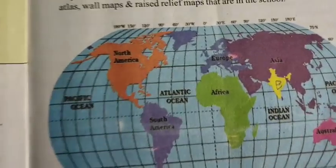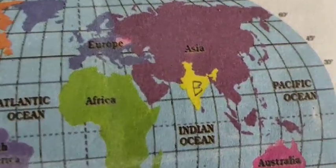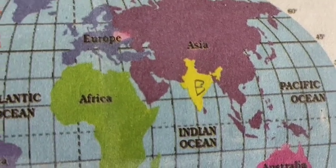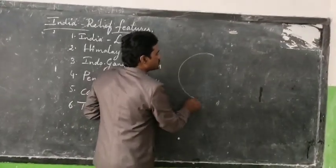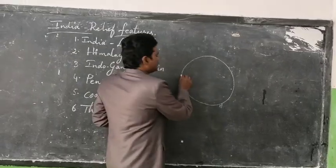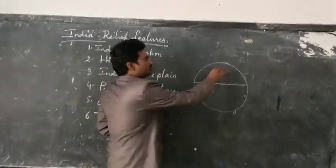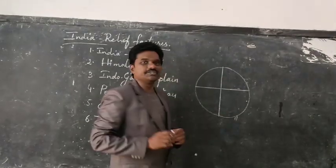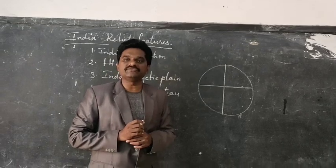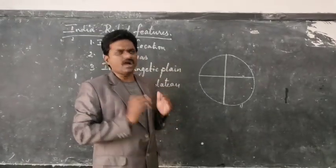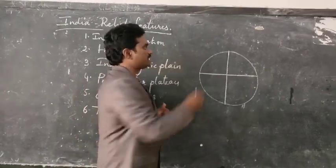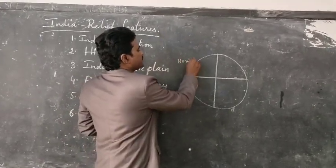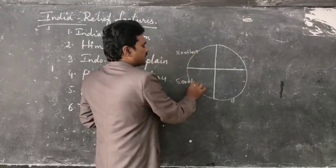Dear students, observe very clearly the yellow colored shaded part — that is our country India. You are now going to learn where India is located. According to the latitudes and longitudes, zero degree latitude is the biggest latitude and zero degree longitude is called the Greenwich longitude, which passes through London. This equator divides the world into two hemispheres.